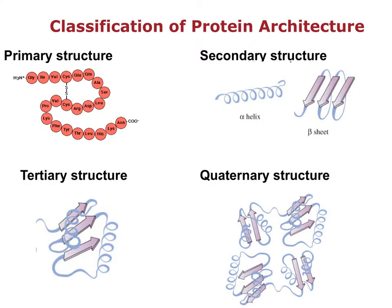In terms of classification of protein architectures, you have primary, secondary, tertiary, and quaternary. Primary structure is essentially the amino acid sequence. Secondary structure gives more detail — you have alpha helices and beta sheets as elements of secondary structure. Tertiary structures are formed by packing of secondary structural elements into more globular domains. Quaternary structures contain several polypeptides with tertiary structure that assemble together.